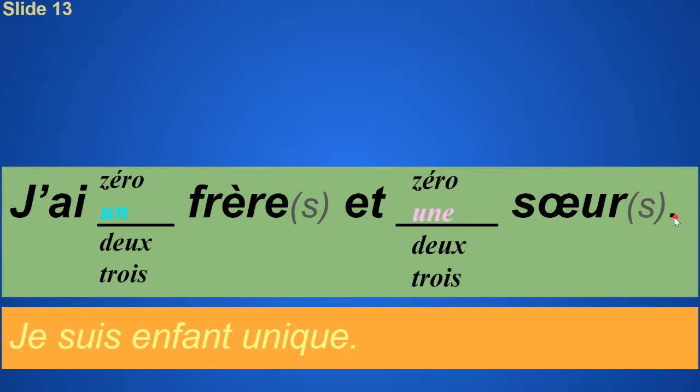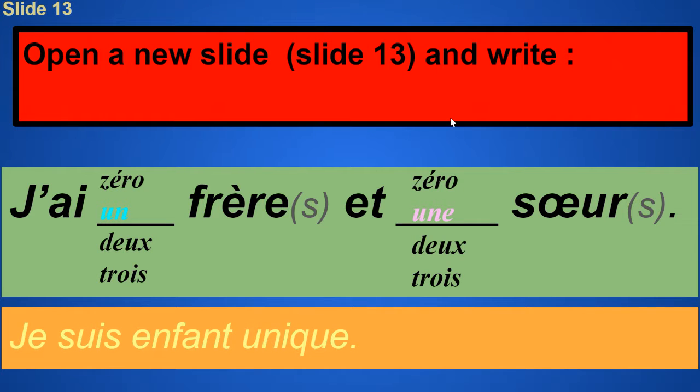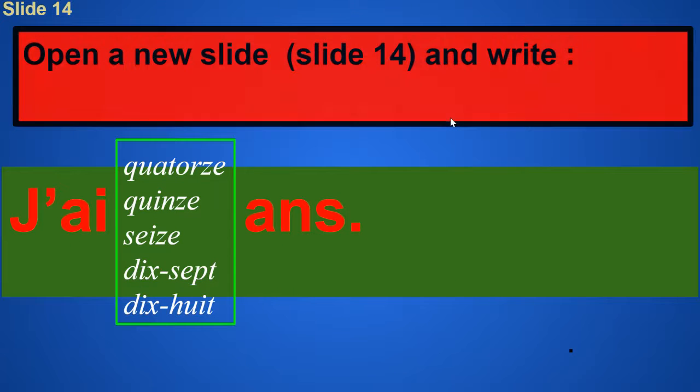Go ahead and prepare that slide. And there you can illustrate with a family picture of your choice. And there's one more slide you're going to add, which is your age. So for slide number fourteen, you're going to open a new slide, slide fourteen, and write j'ai, whichever your age is, fourteen, fifteen, sixteen, seventeen, or eighteen, ans, and then a period.